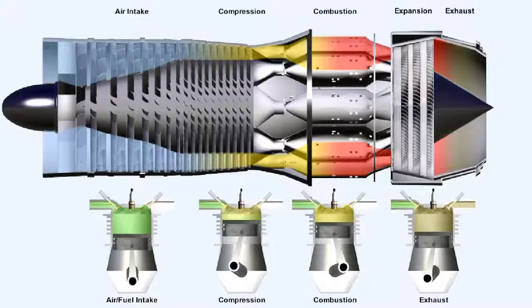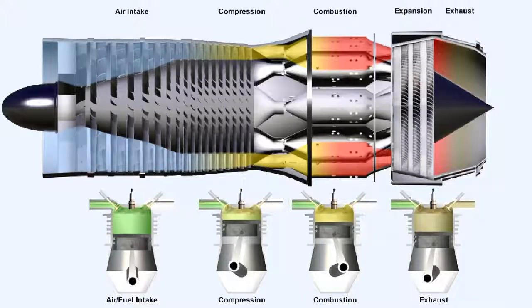The working cycle of the gas turbine engine is called the Brayton cycle, after George Brayton, an American mechanical engineer who invented the continuous ignition engine, which was the basis of the gas turbine engine. The Brayton cycle and the working cycle of the four-stroke piston engine — the Otto cycle — are very similar, as can be seen in this diagram.